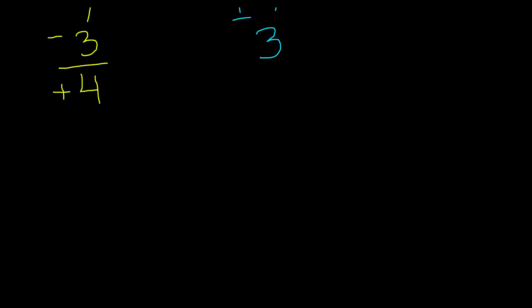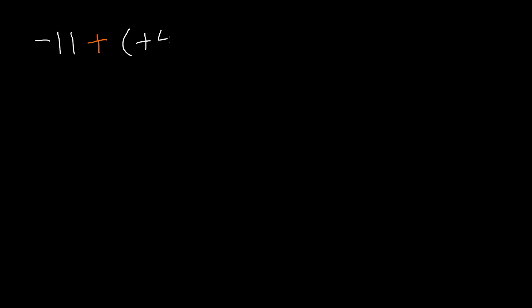Okay, now let's do another problem. We have negative 11 plus positive 4. Again, the parentheses are just so as not to confuse you. Remember, there's one simple rule: subtract the smaller number from the larger number. I'll take 11 and 4 and subtract them. 11 minus 4 gives me 7, so now I have my solution.